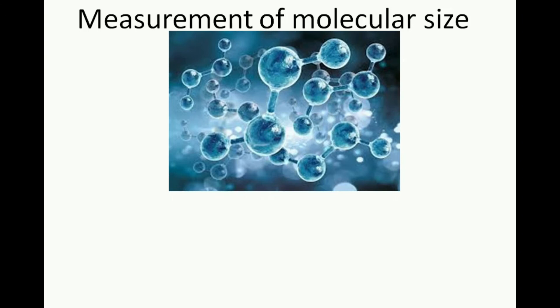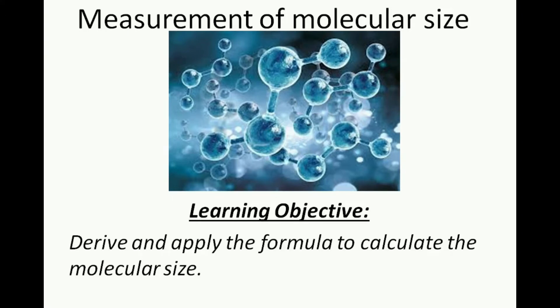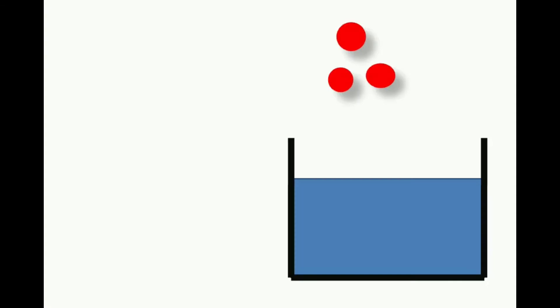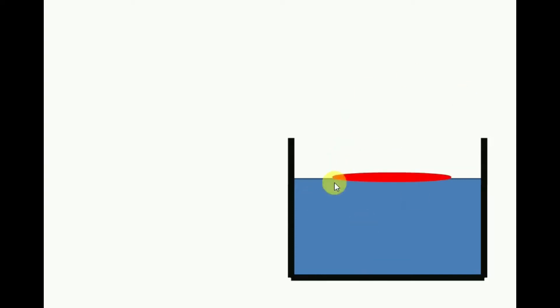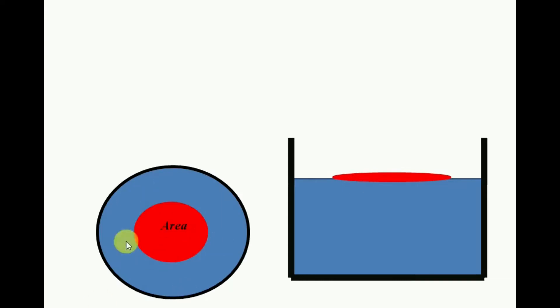Hello everyone, today in this video I'm going to discuss a method to measure the size of a molecule. After this video you should be able to derive the formula to calculate the size of a molecule and use that formula. To measure molecular size, we take water and put some drops of oil over it so that it forms a thin film on the surface. Looking from the top you'll see a circular shape, and you can easily calculate the area by measuring the diameter.